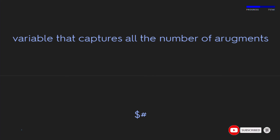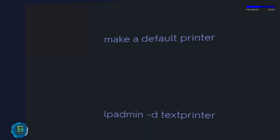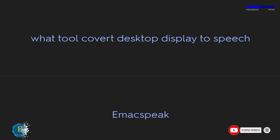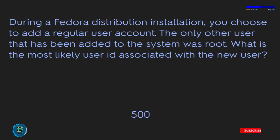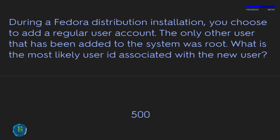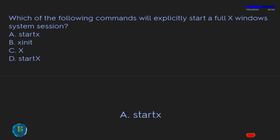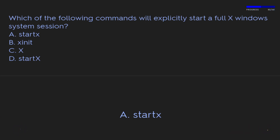The variable that captures the number of arguments passed is $#. To make a default printer, use: lpadmin -d textprinter. The tool that converts desktop display to speech is Orca. During a Fedora installation, after root, the most likely UID for the first new user is 500. Which command converts encoding from one type to another? iconv. Which command explicitly starts an X Window System session? startx.